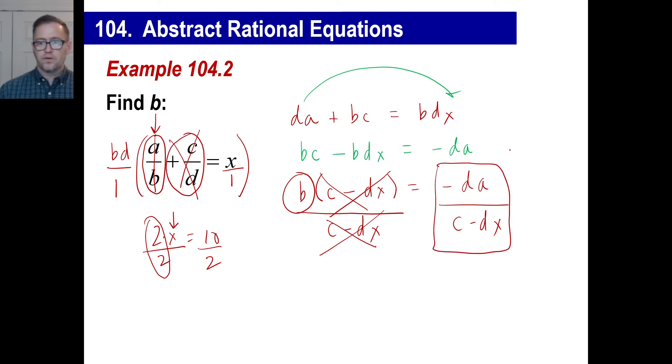And again, here's another perfectly correct answer that you might see in the back of your book that looks different from yours. If the back of the book has positive DA over, let's say, negative C and positive DX, as long as all three of those terms are the opposite side, you're fine. And again, the denominator might have, it might be in different order, like DX minus C. That's okay as well. All right.